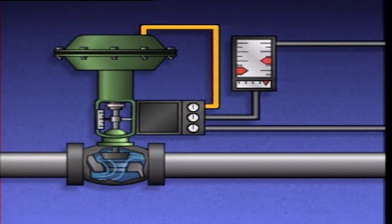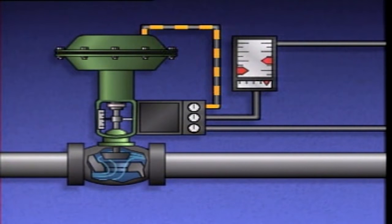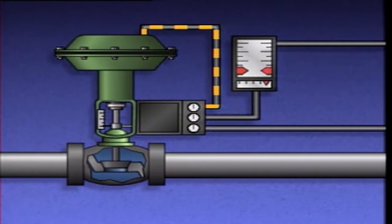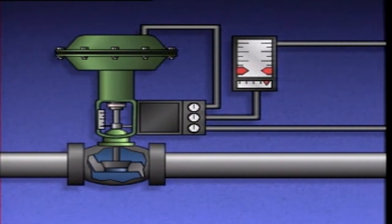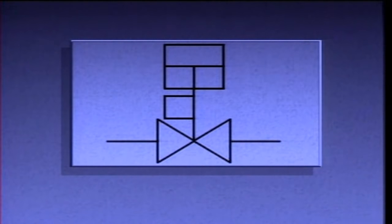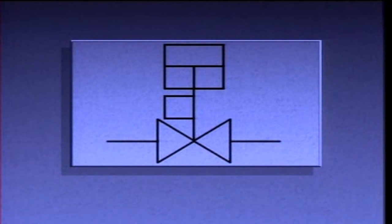As the valve reaches the fully closed position, actuator movement is stopped. On a piping system diagram, a positioner may be represented by its standard symbol.